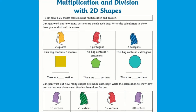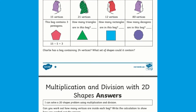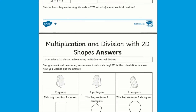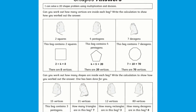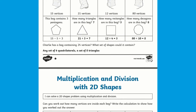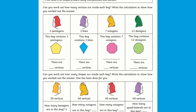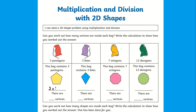Once your pupils are confident with properties of shapes, you may want to challenge them with these differentiated problem solving worksheets. Children must solve 2D shape problems using multiplication and division. The sheets include questions in which children must calculate how many vertices the noted shape has and use this information to calculate how many are inside the bag. This is a fun way to put your children's knowledge of 2D shape properties to the test.